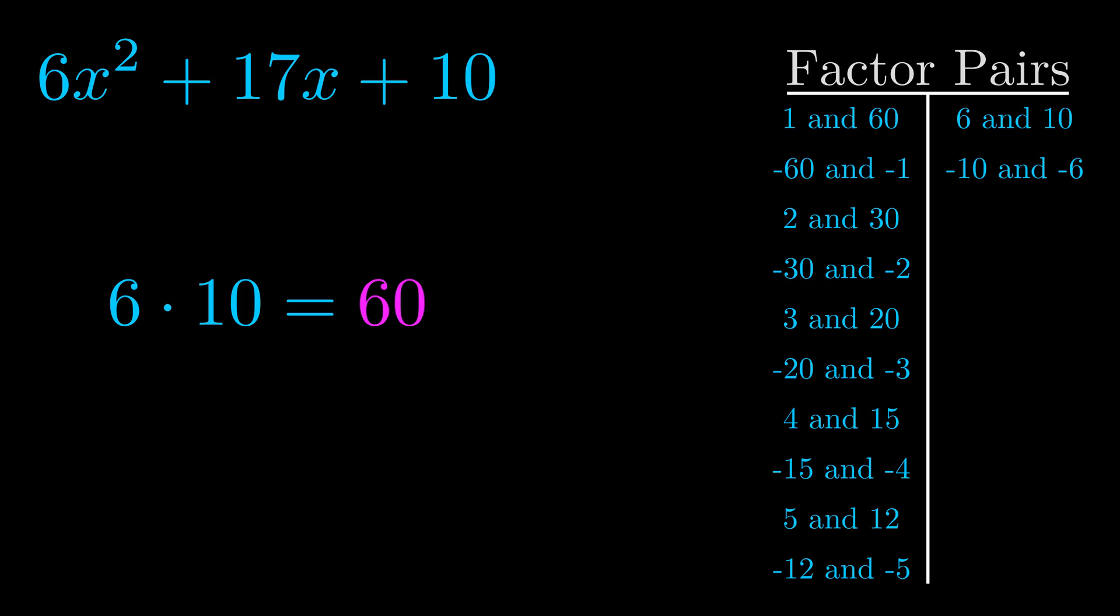The b value is the coefficient on the x term. That's the middle term, the one that we haven't done anything with yet. And really this is the only factor pair that we need.